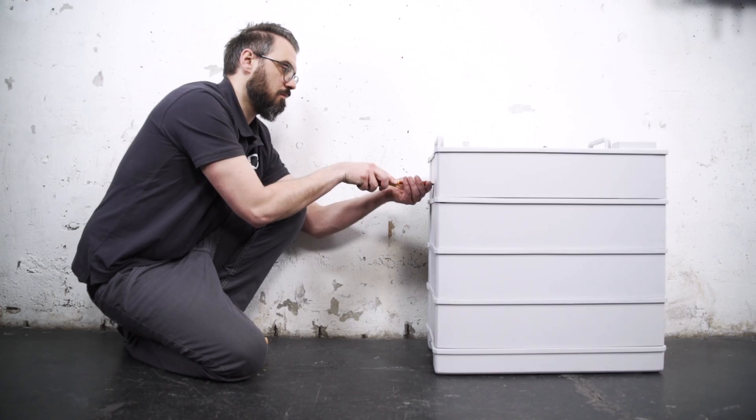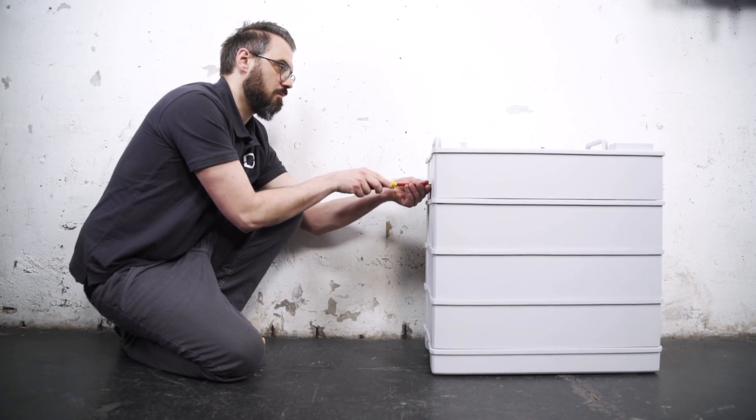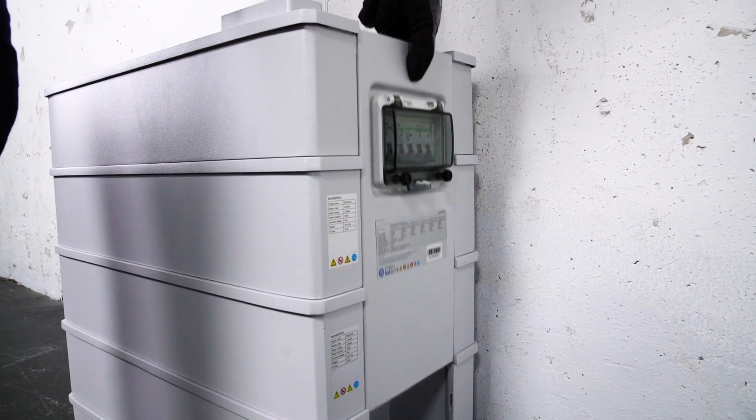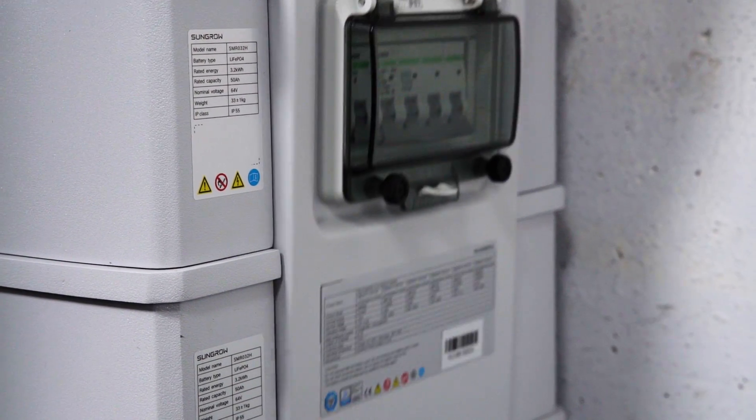Fix the modules on both sides with the included M5 screws. Next step is to connect the switch gear to the base. Slide it into the foreseen slot on the right side of the battery.